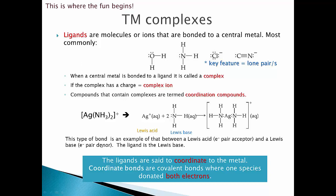As an example, silver with two NH3 groups has a positive charge overall — this is the complex ion. The Lewis acid is the silver metal and the Lewis base is the NH3 ligands. We draw the Ag in the middle with the NH3s donating their lone pair of electrons into the silver. The ligands are said to coordinate to the metal via a coordination bond, donating both electrons into it.